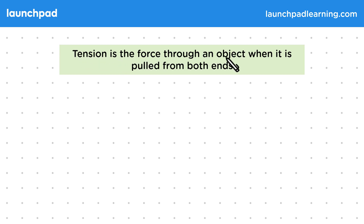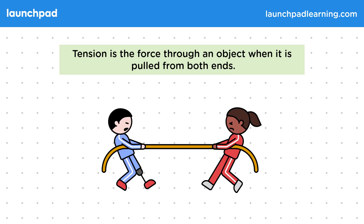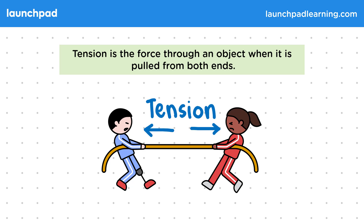Tension is the force through an object when it is pulled from both ends. There is tension in a rope, for example, which pulls both people towards each other. When the rope is taut, the tension is the same throughout. You should be familiar with these types of contact forces for your exams and also be able to identify them in systems of forces.